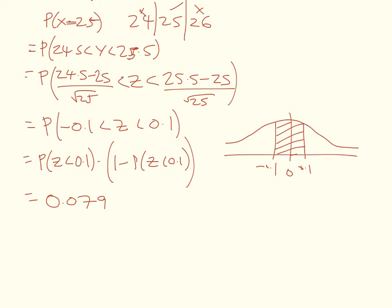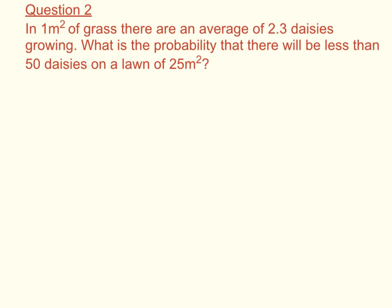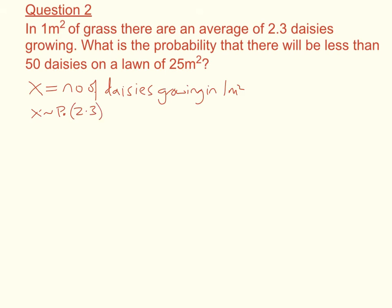Let's now move on to one more example. Question 2: in 1 metre squared of grass there are an average of 2.3 daisies growing. What is the probability that there will be less than 50 daisies on a lawn of 25 metres squared? Let x be the number of daisies growing in 1 metre squared, so x has a Poisson distribution of 2.3. But we need 25 metres squared, so I'll define a new random variable y — the number of daisies in 25 metres squared — which has a Poisson distribution of 2.3 × 25 = 57.5.